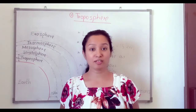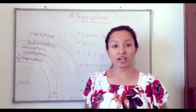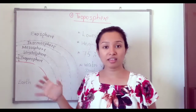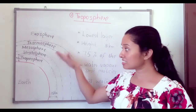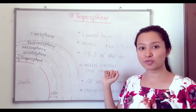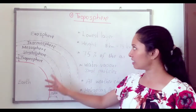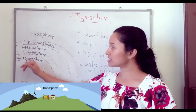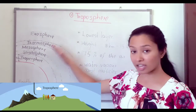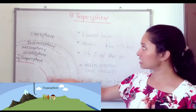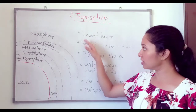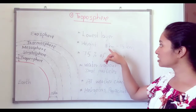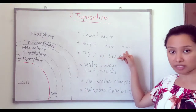The first layer is troposphere. Now we are going to learn about these layers. The first layer is the troposphere — it is the lowest layer of the atmosphere. The height of this layer is about 8 to 15 kilometers.